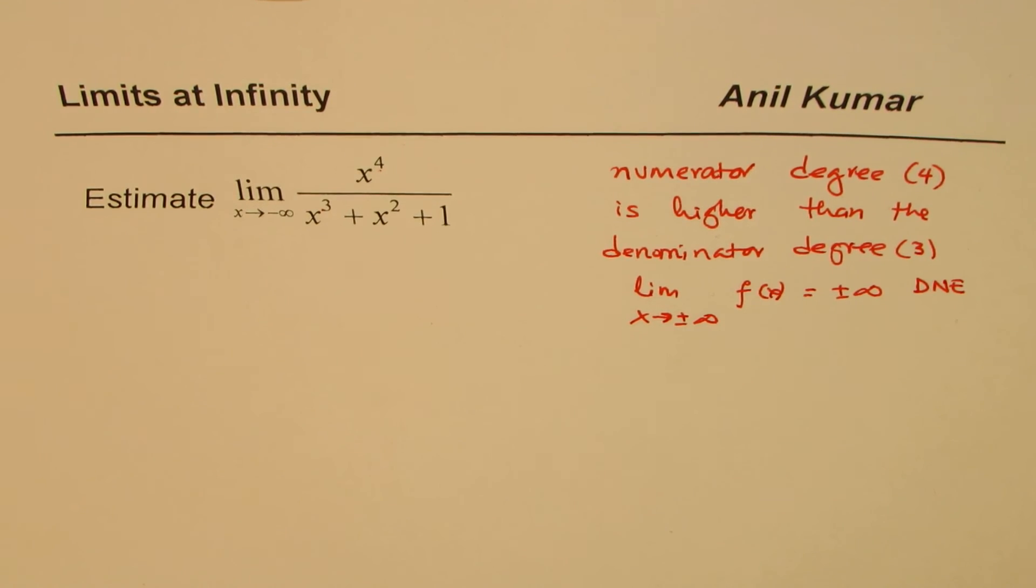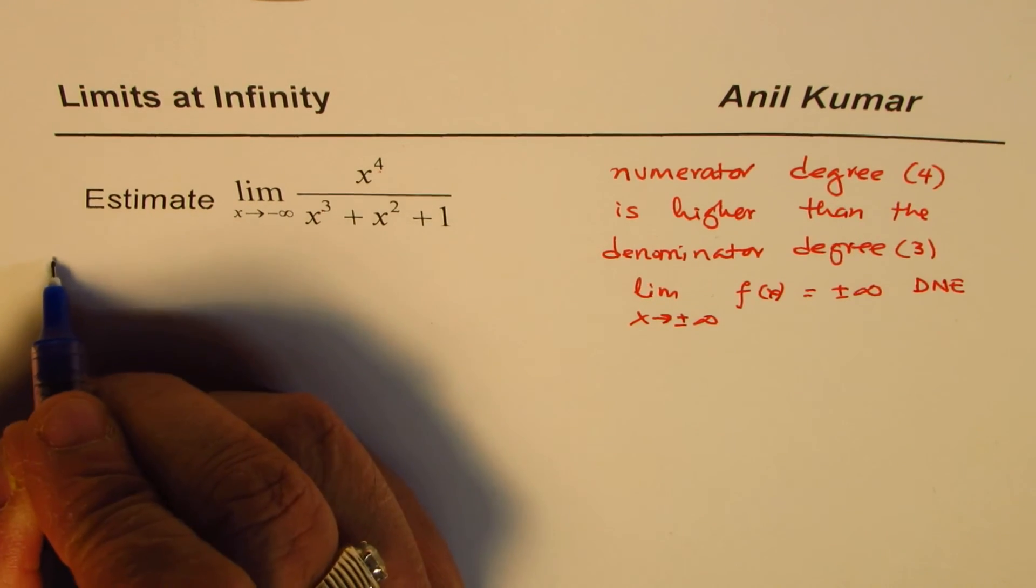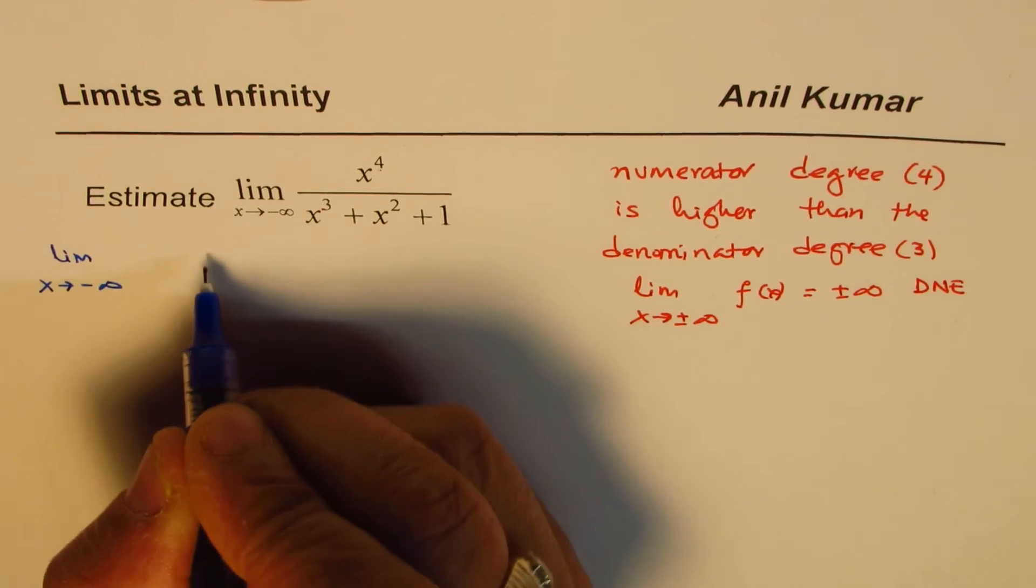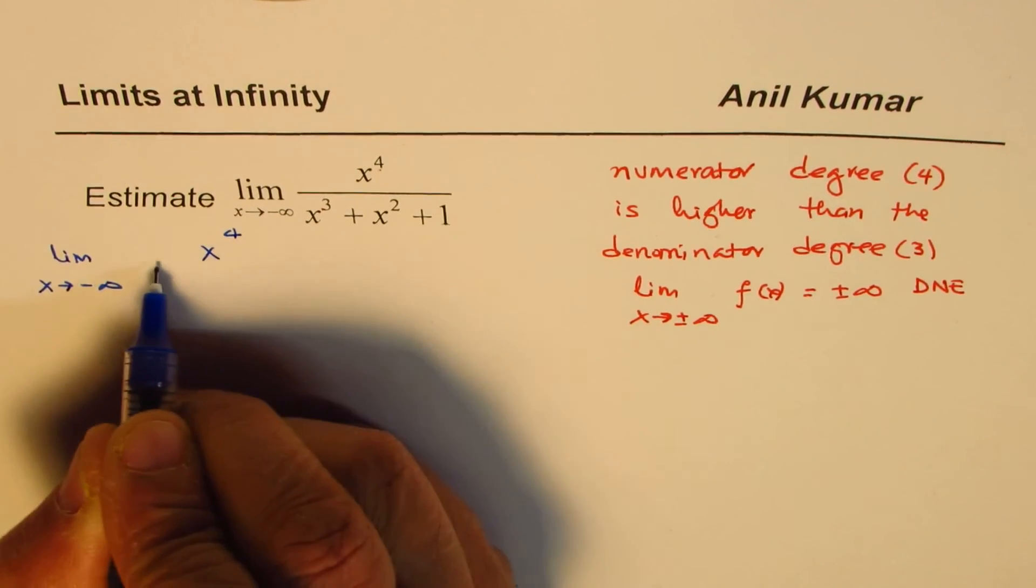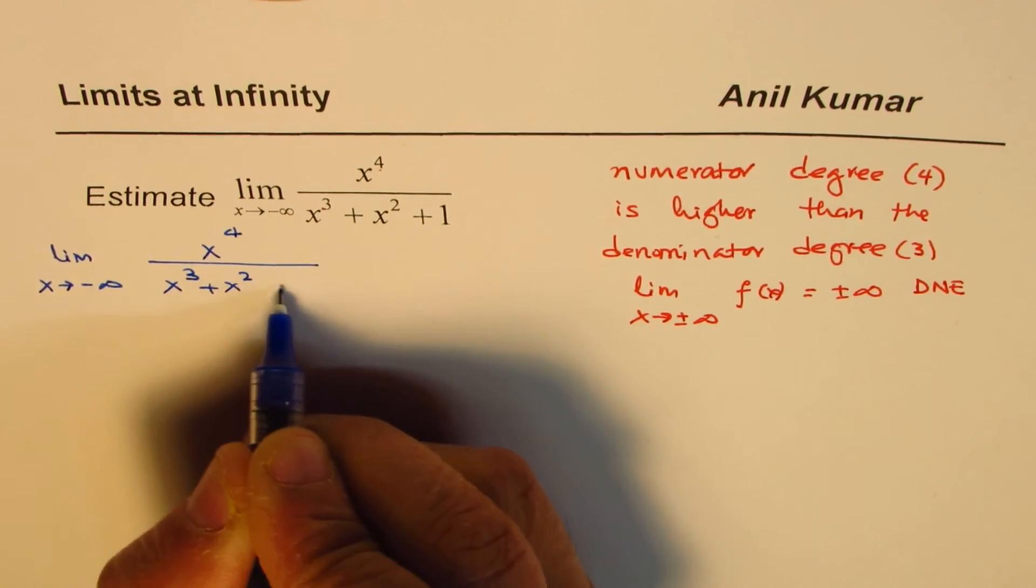Perfect. So that is what is the general rule, and here we'll see how. So let's solve this. So the question before us is limit x approaches negative infinity, x to the power of 4 divided by x cubed plus x squared plus 1.